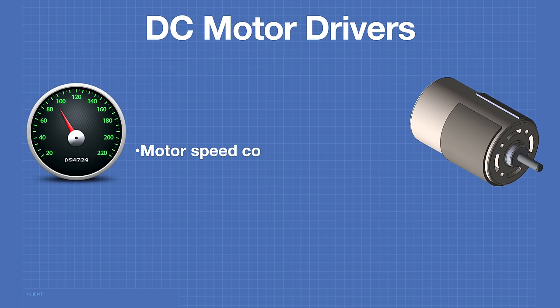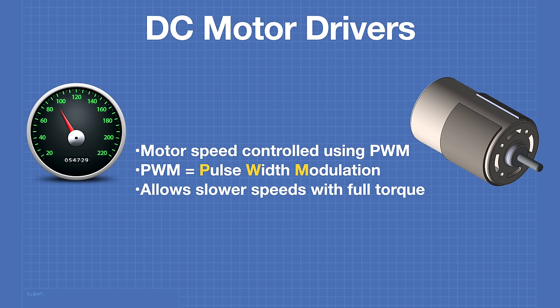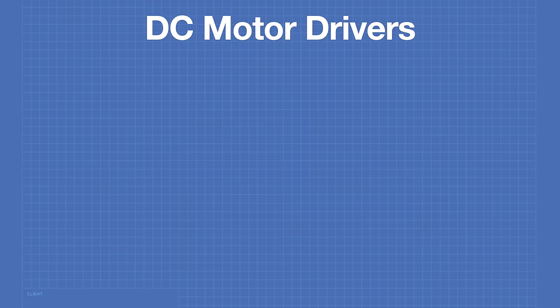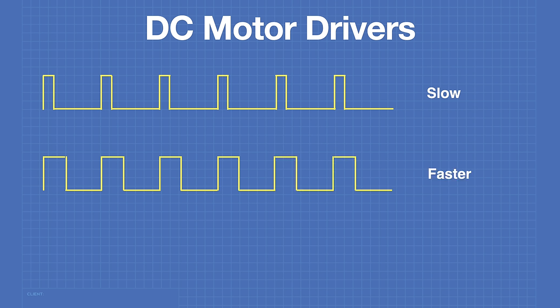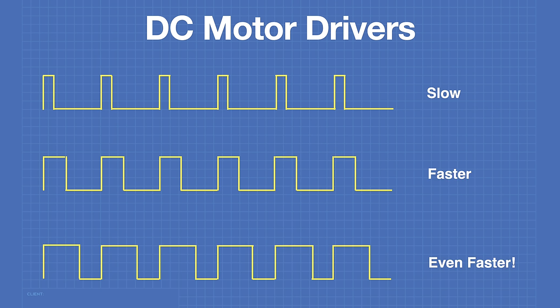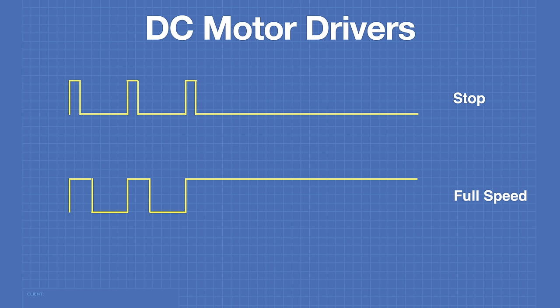We control the speed of DC motors using PWM — Pulse Width Modulation. PWM allows us to drive the motor at slower speeds while retaining full torque capabilities. The width of the pulse determines how fast the motor rotates. Very tiny pulse widths result in slow rotation; increasing the width causes faster rotation. The frequency of the pulse stays the same — it's just the width that varies. Holding the pulse low stops the motor; holding it high runs it at full speed. Note that some high-powered H-bridge drivers do not recommend driving a motor at over 98% speed.